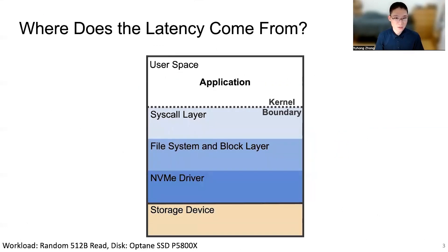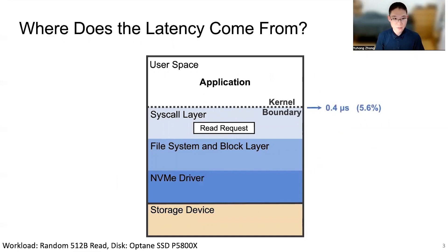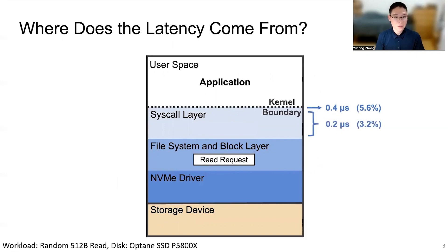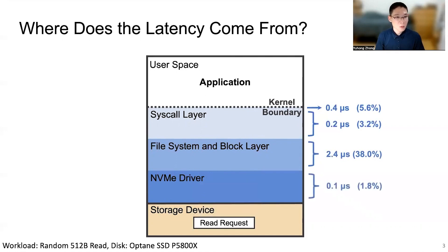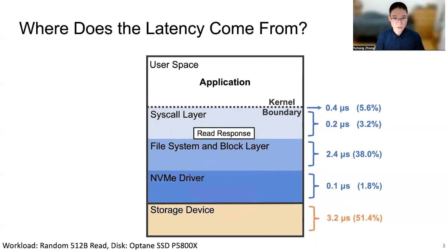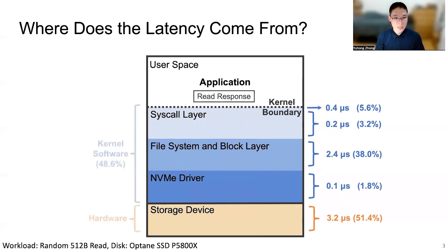So what is the kernel software overhead? Let's take a look at the data path of one typical read request. When applications submit a read request, they first need to cross the kernel boundary and reach the syscall layer. After that, the request will be sent to the file system and the block layer, and is then forwarded to the NVMe driver. The NVMe driver sends the request to the storage device. Once the read request is completed, the response is returned to user space in reverse order. The percentage of time spent in the storage device represents hardware overhead, and the rest is kernel software overhead.